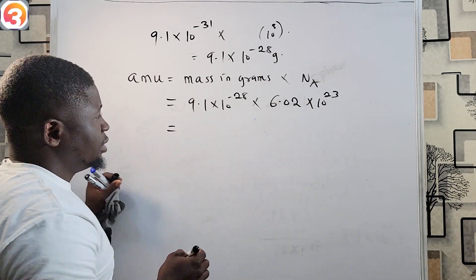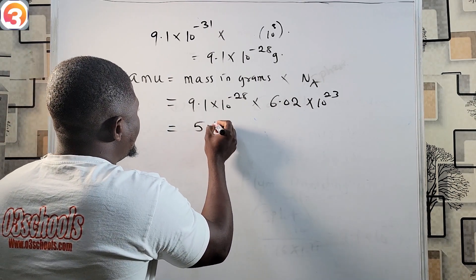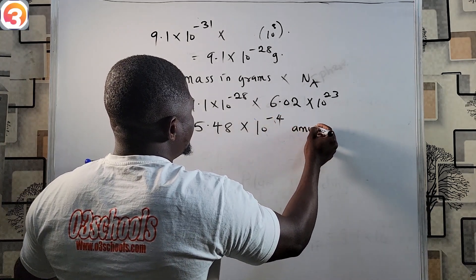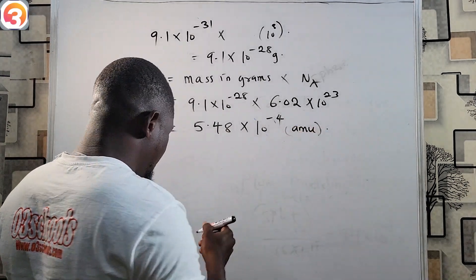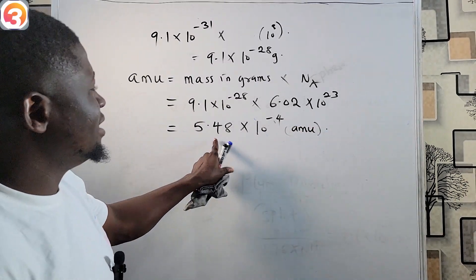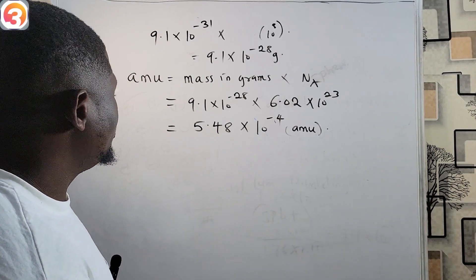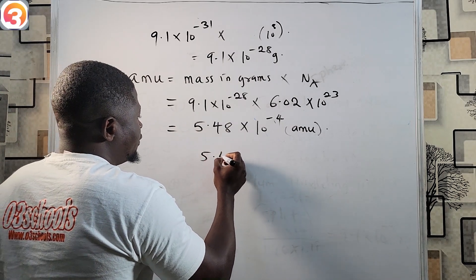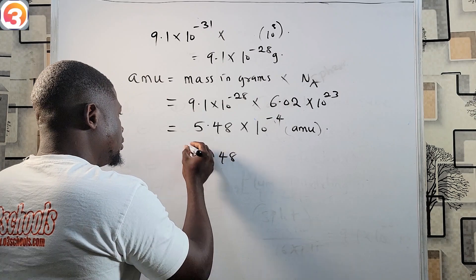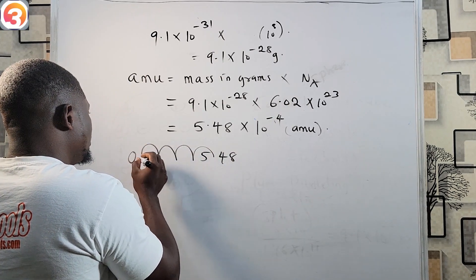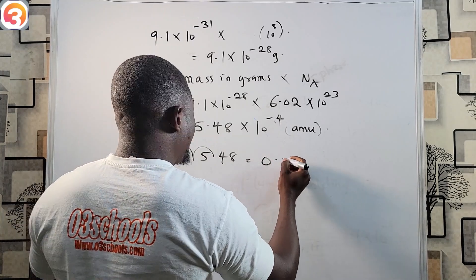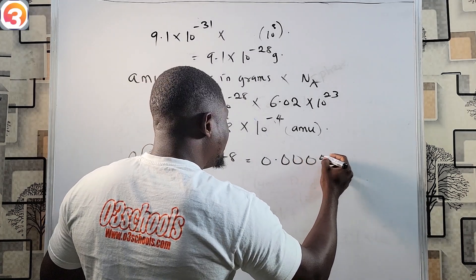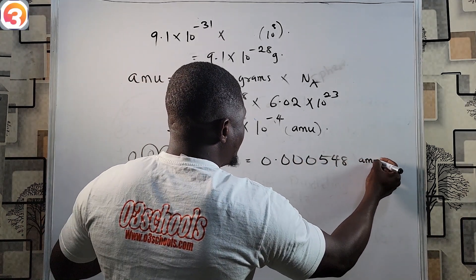Doing this calculation, you should get 5.48 × 10⁻⁴ AMU — that is the mass of an electron in atomic mass units. To convert this to a decimal fraction, 5.48 × 10⁻⁴ means moving the decimal point back four places, giving 0.000548 AMU.